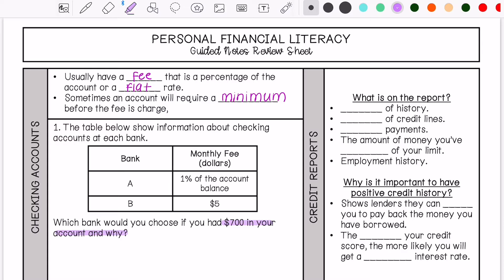First, for Bank A, I need to figure out what is 1% of $700. I'm using a proportion to figure that out. So 1% is $7 and then Bank B my rate is $5 no matter what. So I would choose Bank B because the monthly fee is cheaper.